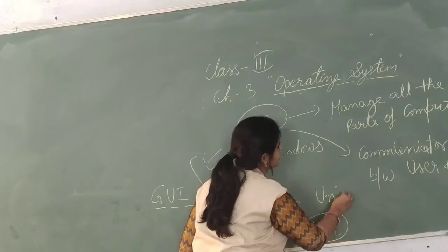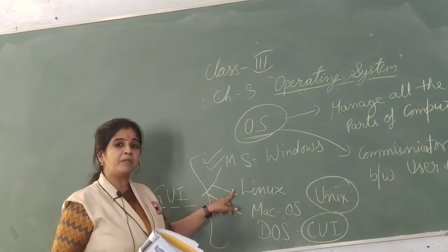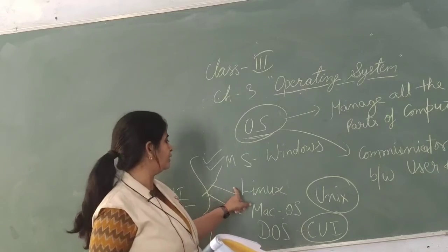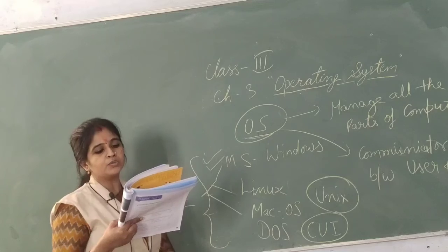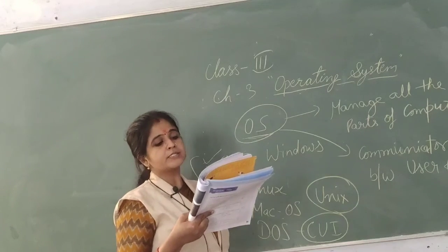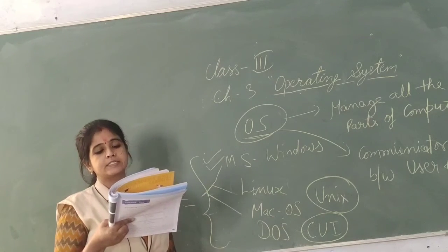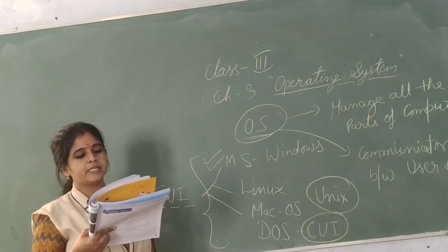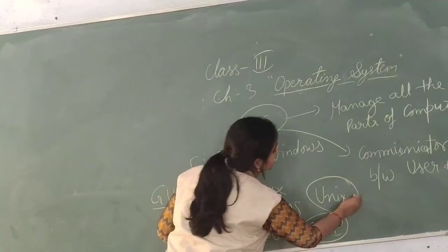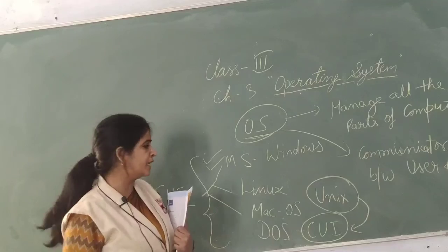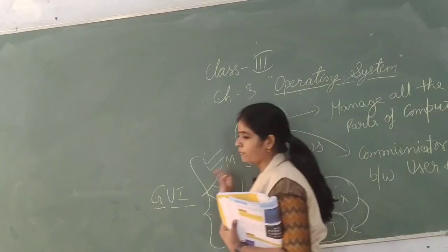One more operating system in your book is Unix. Unix source code is not available to the general public, unlike Linux which is open source. Unix primarily uses a command line interface and is written in C, which allows quicker modification, acceptance, and portability. Different versions of Unix are Solaris, AIX, HPUX, BSD, IRIX, etc. Unix is popular in companies, universities, and enterprises, and is basically CUI used in big organizations to perform specific tasks.